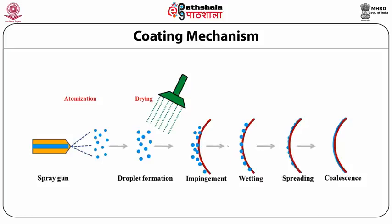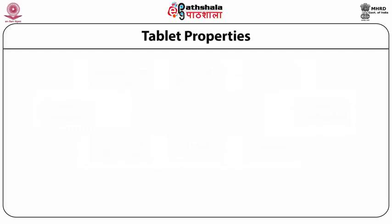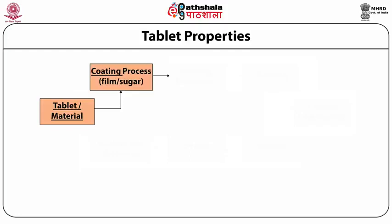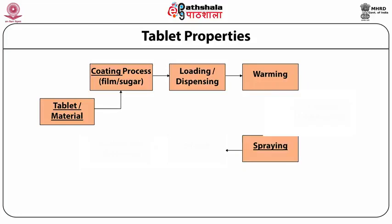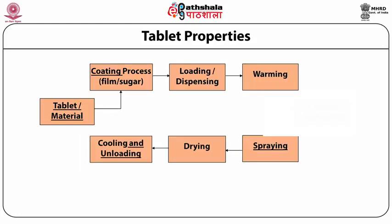The successful application of the coating formulation to a tablet provides the visual characteristic for the product. Thus, the quality of the product may be judged on this final production step. The coating process is usually a batch-driven task consisting of the following phases: tablet material, coating process, then loading, warming, spraying, drying, and unloading.